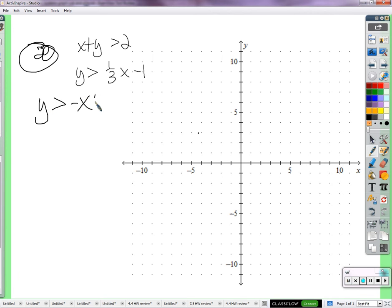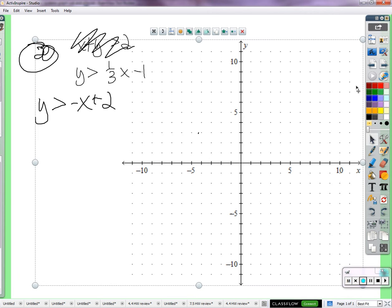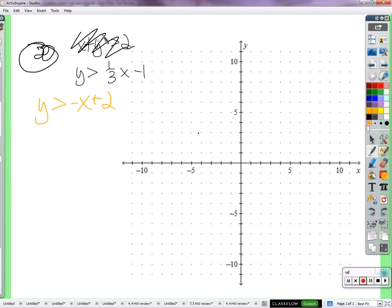So we get y is greater than negative x plus 2. Before it looked like x plus y is greater than 2. So if we subtract x from both sides, we've got y greater than negative x plus 2.